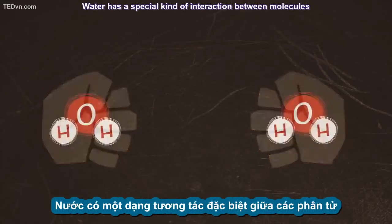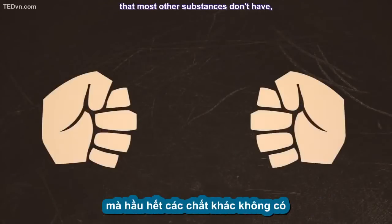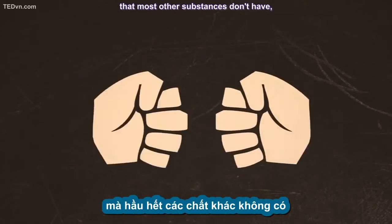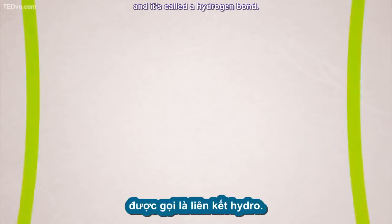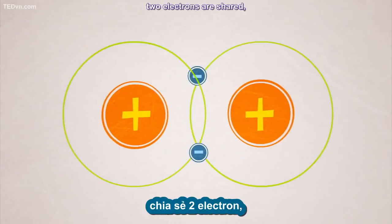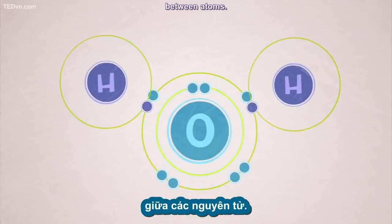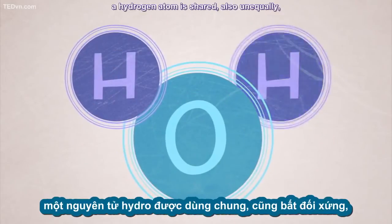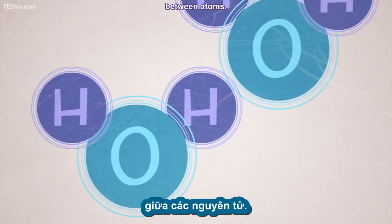Water has a special kind of interaction between molecules that most other substances don't have, and it's called a hydrogen bond. In a covalent bond, two electrons are shared, usually unequally, between atoms. In a hydrogen bond, a hydrogen atom is shared, also unequally, between atoms.